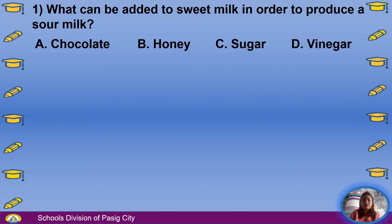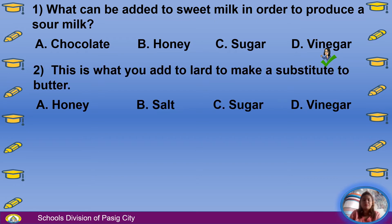Number 1: What can be added to sweet milk in order to produce a sour milk? A. Chocolate, B. Honey, C. Sugar, D. Vinegar. The answer is D, Vinegar.